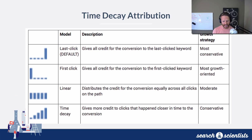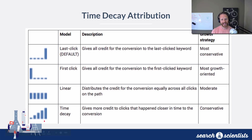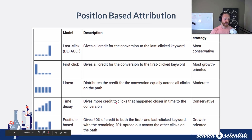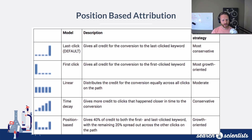There's also time decay — meaning if someone clicks in the beginning of the month and then has two clicks right before they convert at the end of the month, it'll give credit to the one that happened most recently, a little bit less to the one before that, and a lot less to the one at the beginning of the month. There's also position-based, which is kind of like a U-shape — it gives most credit to the first, most credit to the last, and then spreads it out in the middle.